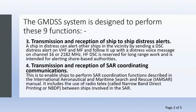Function 3: Transmission and reception of ship-to-ship distress alerts. A ship in distress can alert other ships in the vicinity by sending a DSC distress alert on MF/HF and VHF, and follow it up with a distress voice message on channel 16 or 2182 kHz. Function 4: HF/DSC is reserved for long-range work and is intended for alerting shore-based authorities.